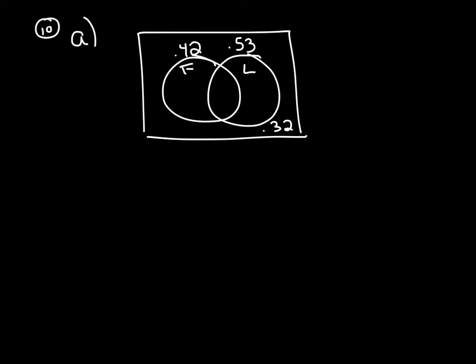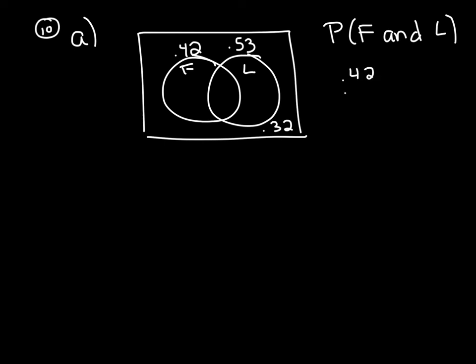Part A: what is the probability that the light bulb is both fluorescent and long life? When they say 'both,' they're looking for the 'and' — the probability of fluorescent and lifelong — which is the overlapping section in the middle. If you add up 0.42, 0.53, and 0.32, it should add up to more than one because the overlapping section is counted in both circles. Adding them gives 1.27, so the 0.27 was counted in both the 0.42 and the 0.53 — that must be our 'and.' So the probability of both is 0.27.